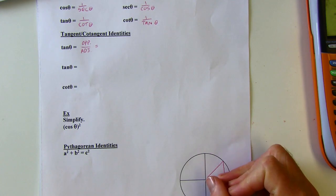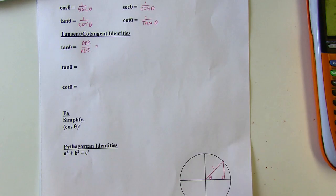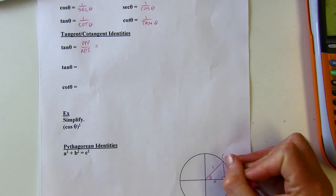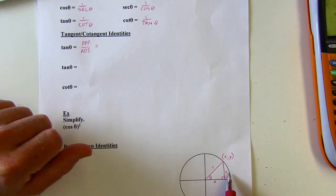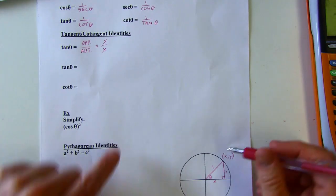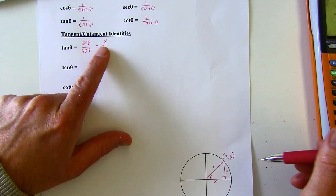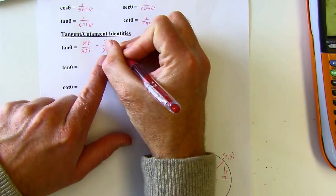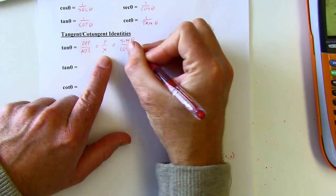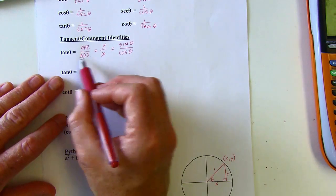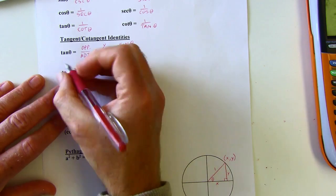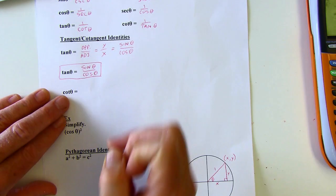I'm going to make this into a right triangle. Our reference angle is right down there. This is a unit circle, so the hypotenuse would be 1. This would be x and this would be y because I go x amount right and y amount up to get here. Opposite would be y and adjacent is x. But the y on a unit circle is equivalent to sine, so I could write y as sine theta over cosine theta.